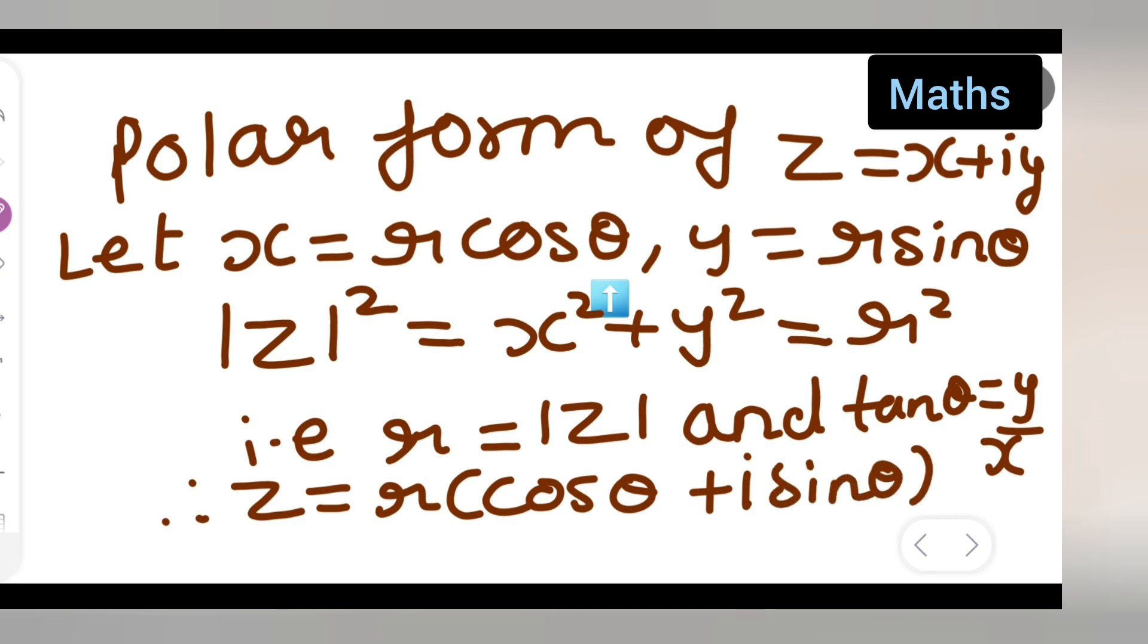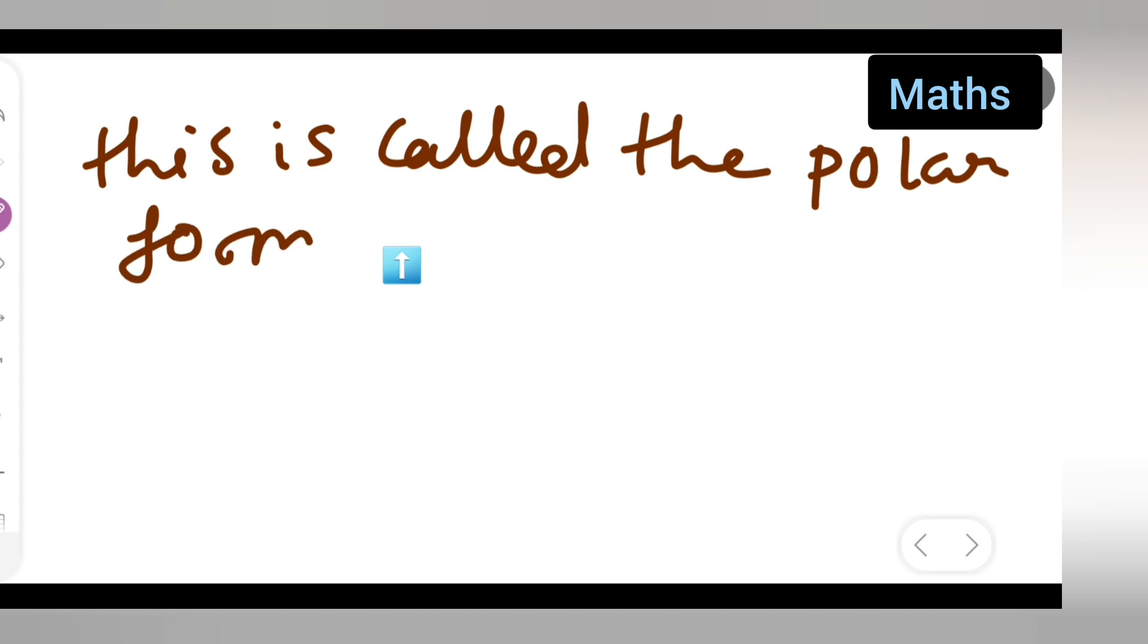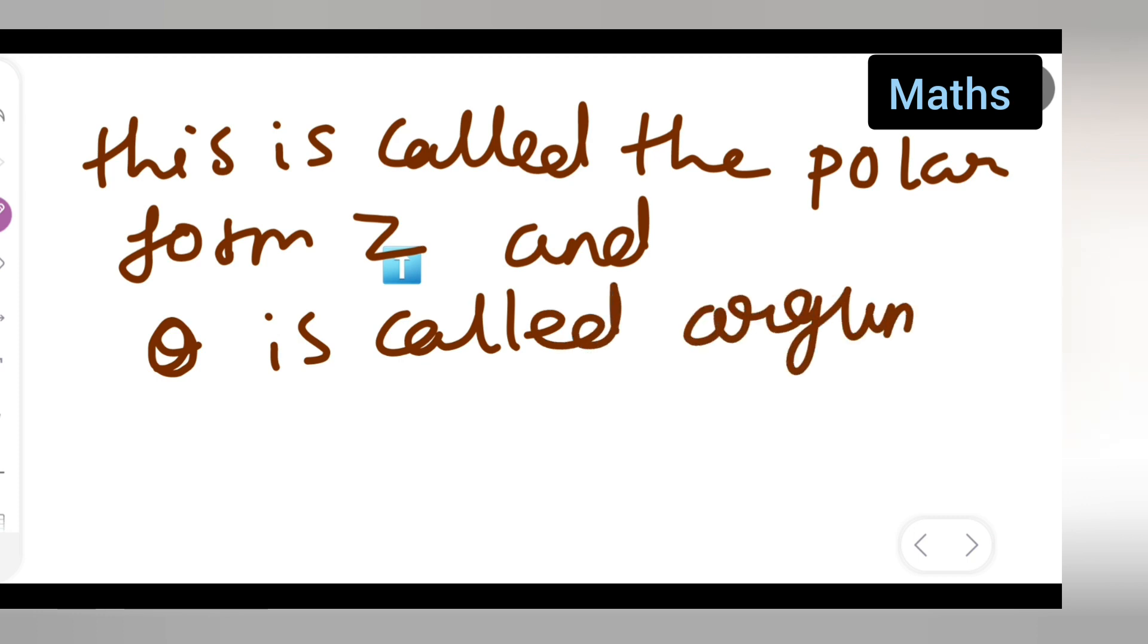Now basically this is called the polar form of z, and theta is called argument of z.